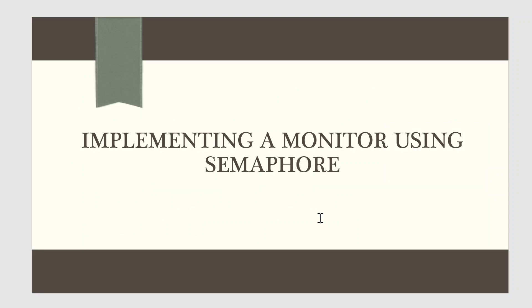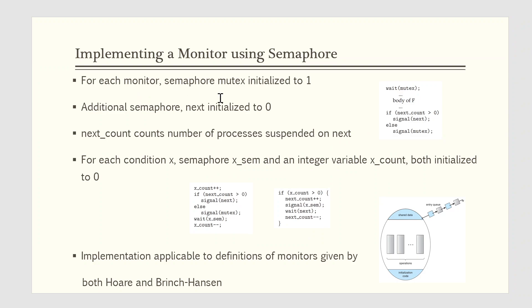We now consider a possible implementation of the monitor mechanism using semaphores. For each monitor, a semaphore mutex initialized to 1 is provided. A process must execute wait of mutex before entering the monitor and must execute signal of mutex after leaving the monitor. Since a signaling process must wait until the resumed process either leaves or waits, an additional semaphore next is introduced initialized to 0. The signaling processes can use next to suspend themselves. An integer variable next_count is also provided to count the number of processes suspended on next.